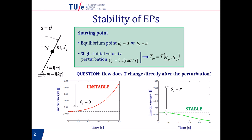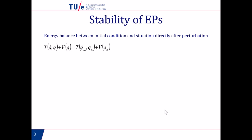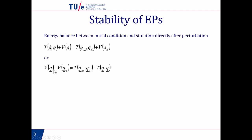So this is the definition of stability for a conservative system. The next step is to define this stability mathematically. We take the energy balance between the initial condition — kinetic energy plus potential energy — and the situation directly after the perturbation. Since the total energy is constant, both total energies have to be the same. Rewriting this, we can say that the difference in potential energy between after and just before the perturbation has to equal the difference in kinetic energy.